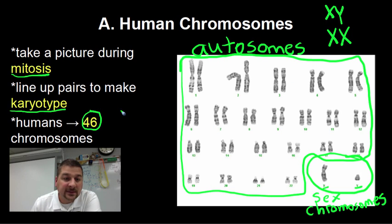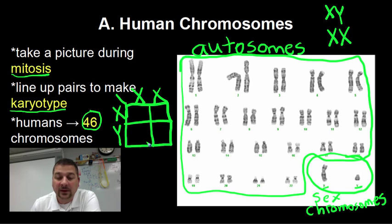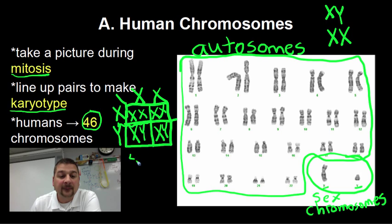Remember, you get a copy from each parent. So if we do a Punnett square, let's say your mother is XX and the father has an X and a Y — what is the chance that you will be a boy or a girl? These two X's come together, and then you get an X and a Y, X and a Y, and you'll see that there is a 50 to 50 ratio.